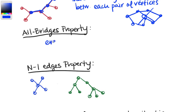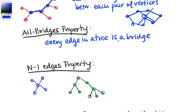The all bridges property: every edge in a tree is a bridge. A bridge is an edge where, if we deleted it, it would disconnect the graph. We can see this in our examples — if we delete any of the spokes on this graph, we get two disconnected pieces. In the green tree, erasing any edge splits it into two parts. So every edge in a tree is a bridge.